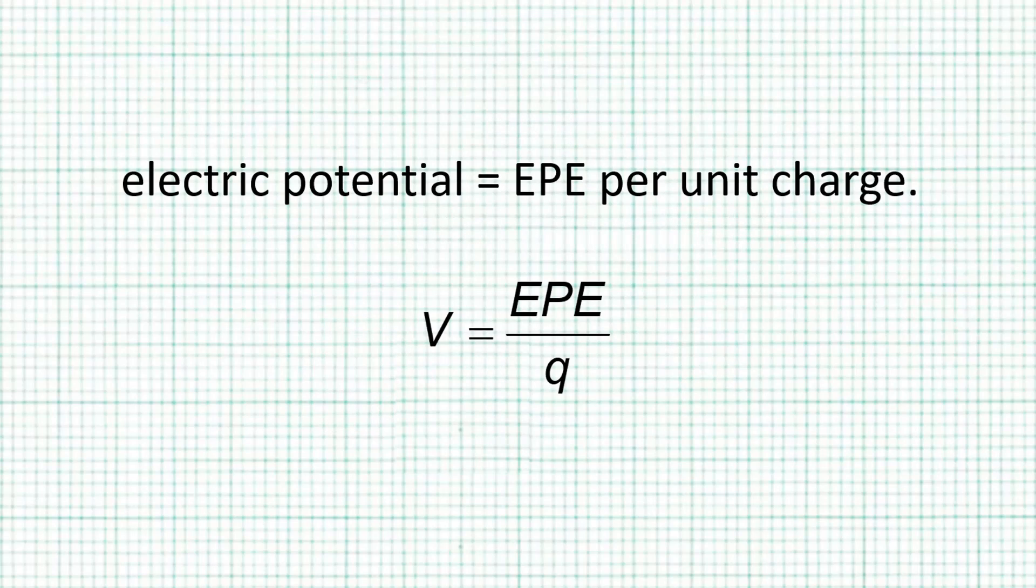The easiest way to understand electric potential is to remember it as EPE per unit charge. It's usually represented by the symbol V and has the SI unit volt. One volt is one joule per coulomb. Since EPE is a scalar, electric potential is also a scalar.